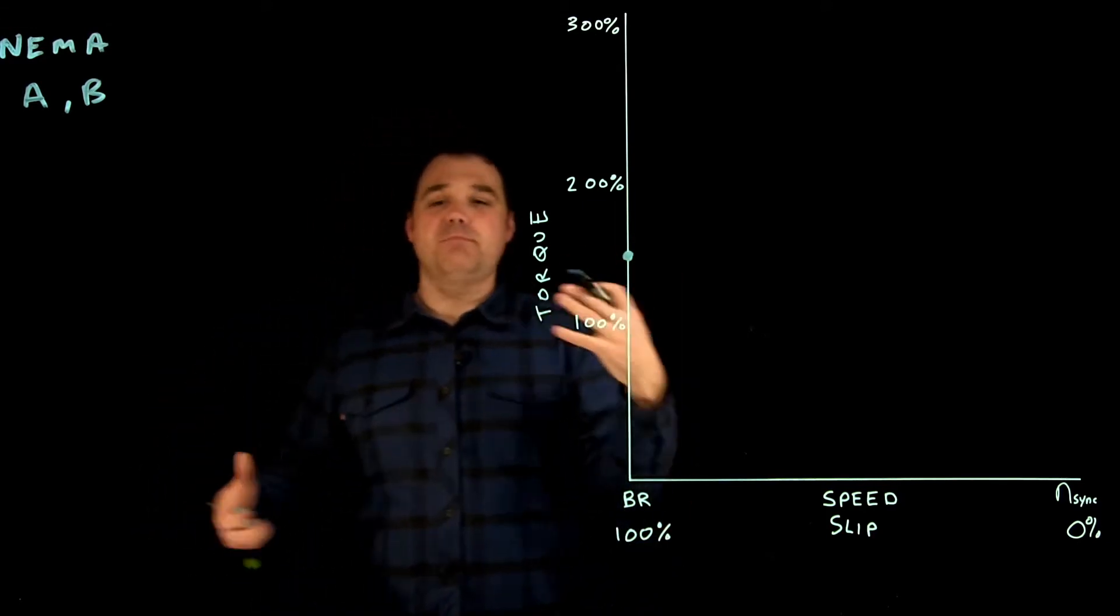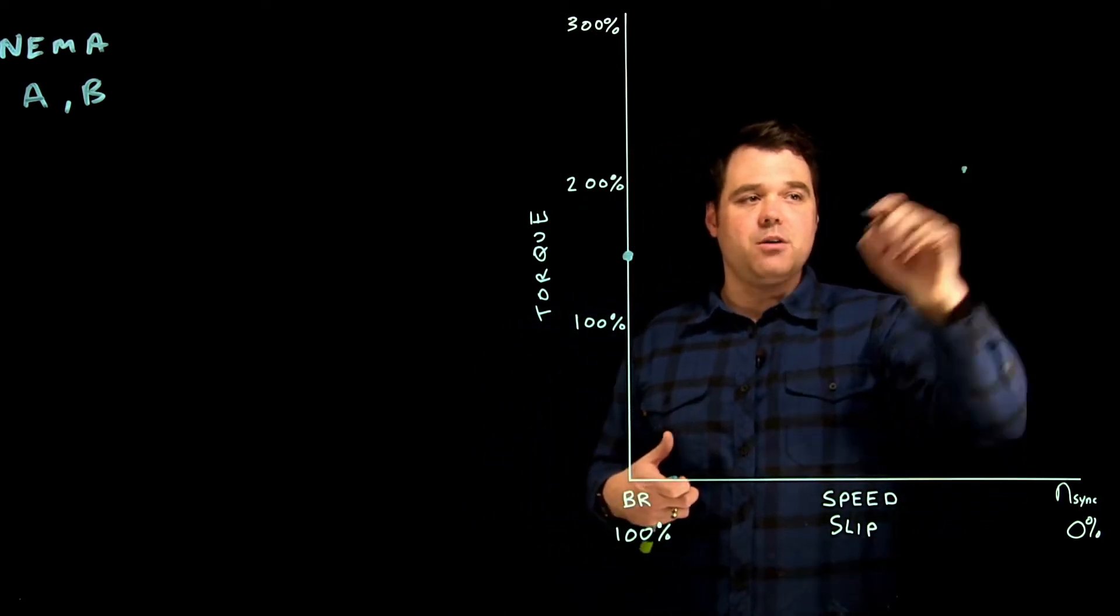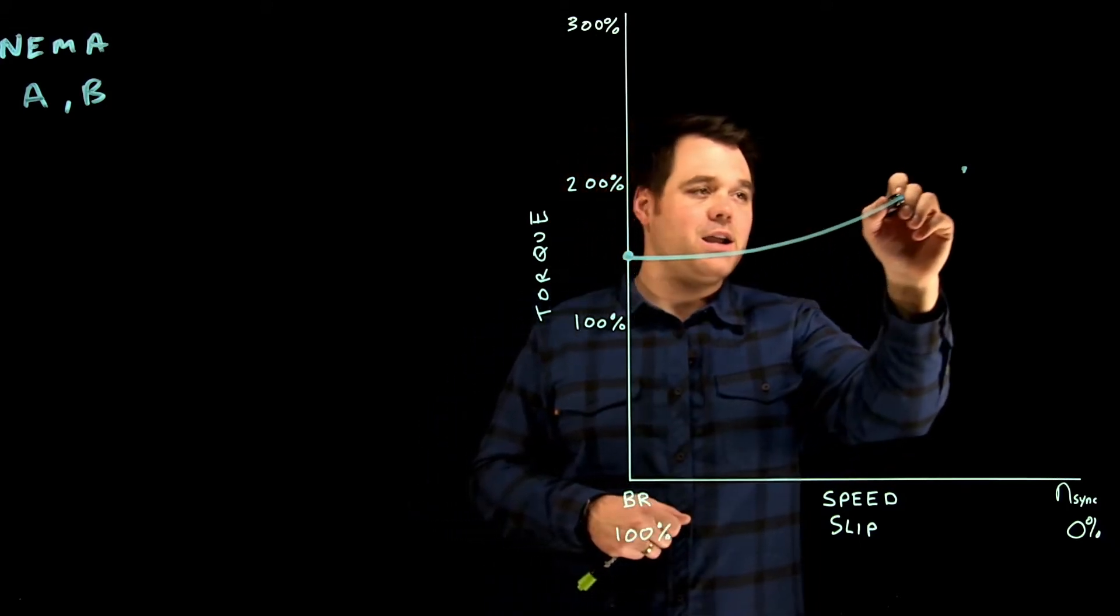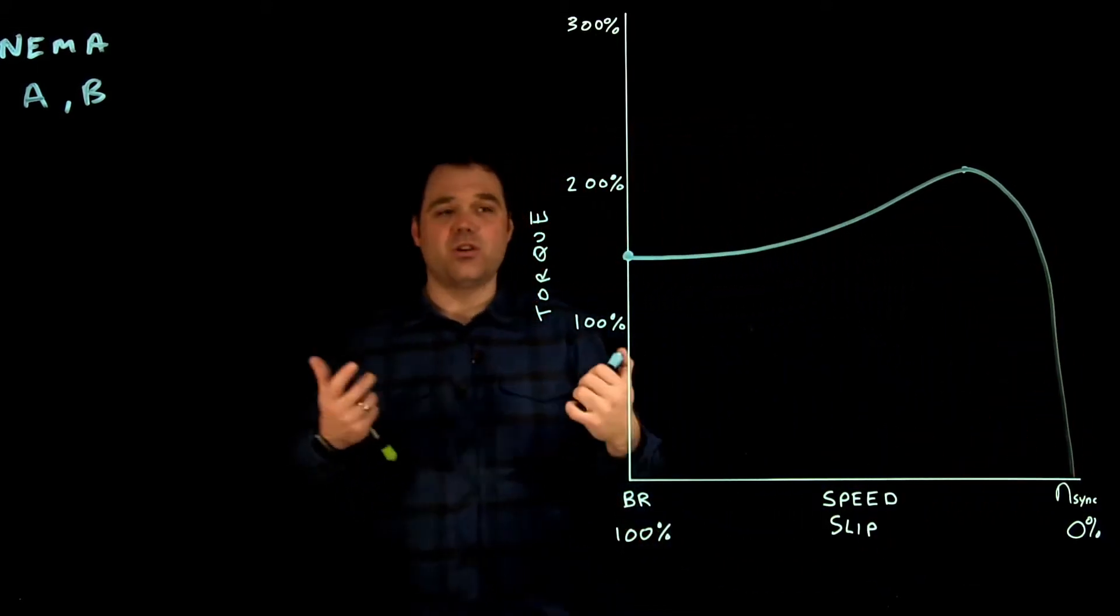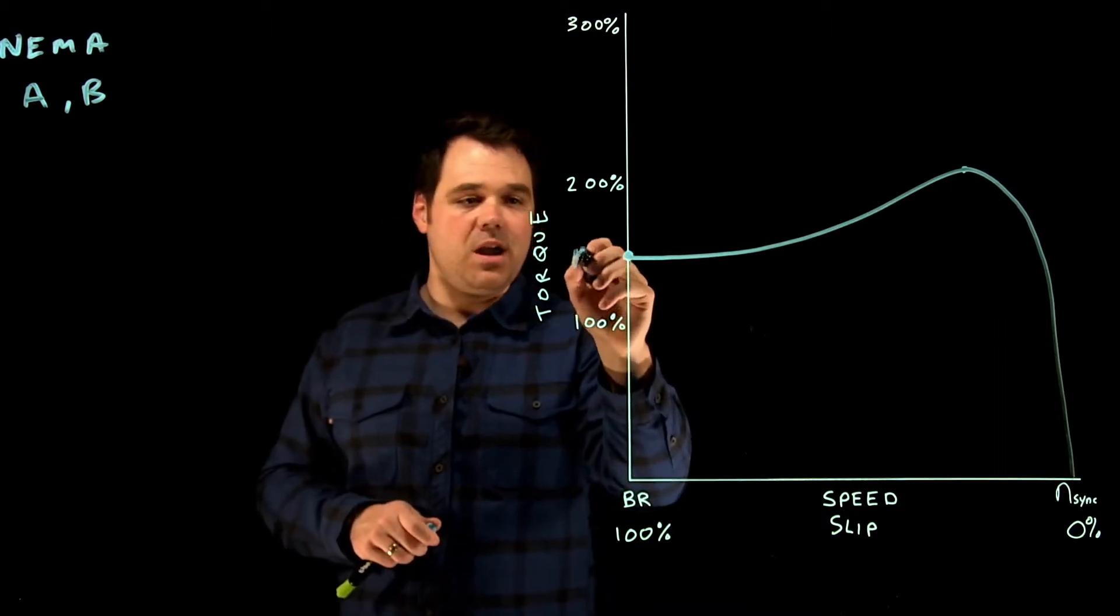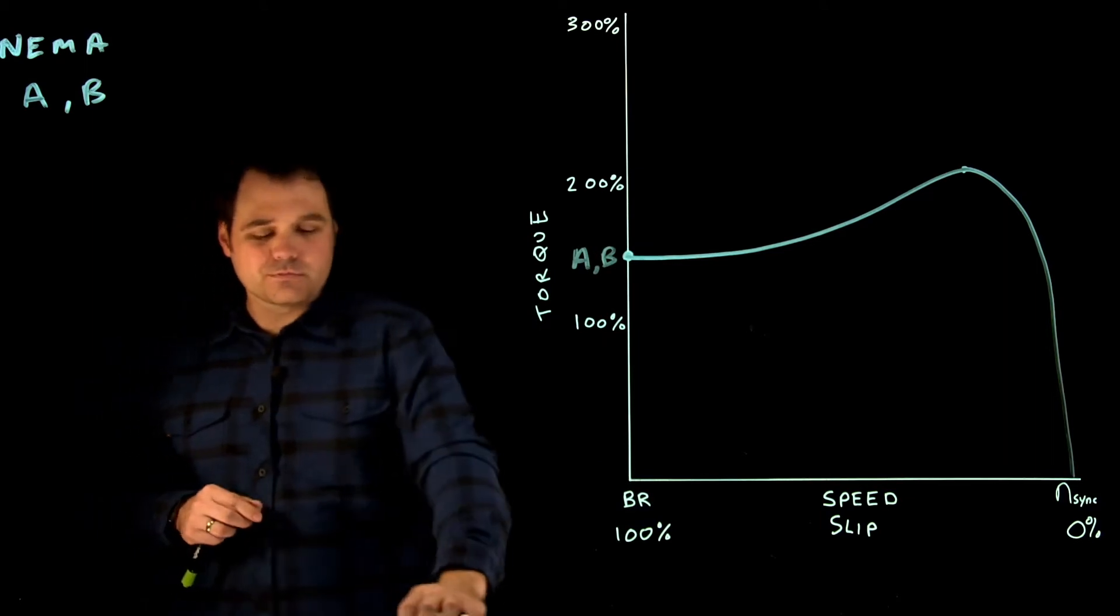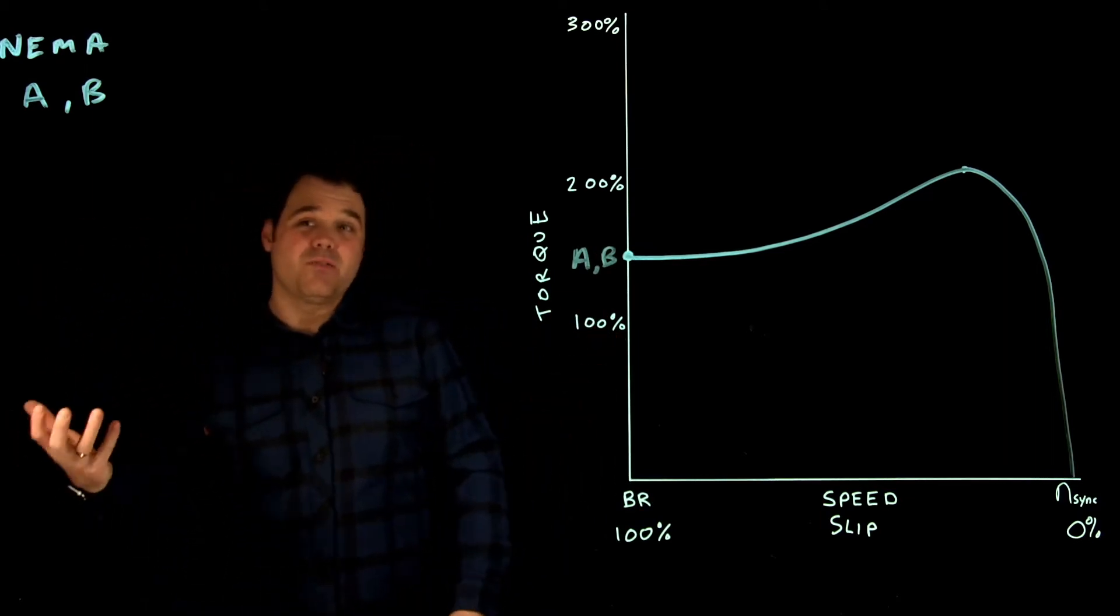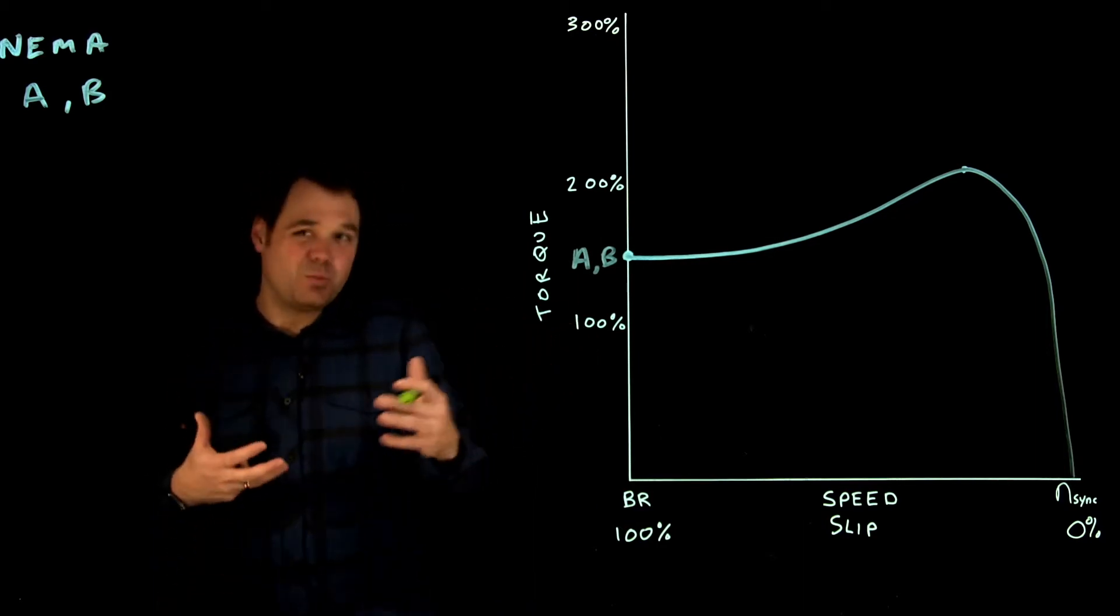And they both peak out around 25% slip at around 200% torque, and their torque curves look something like that. That would be a standard torque curve for a NEMA A and a NEMA B design rotor, of course slightly different. A being a little bit more efficient, B being a little bit lower in rush current and a little bit more common.